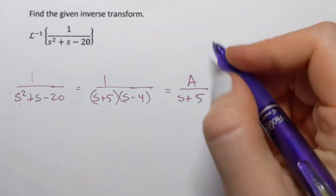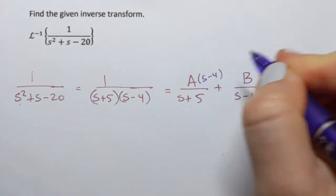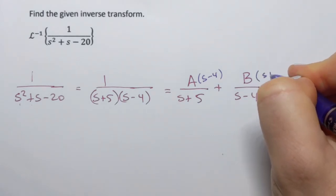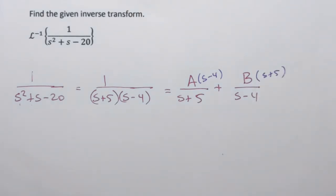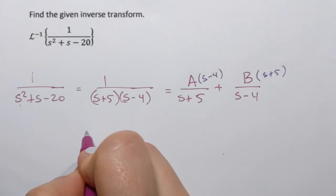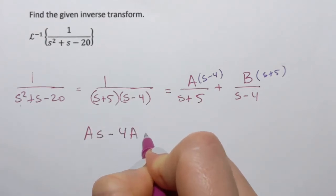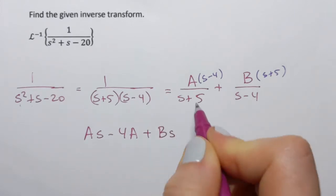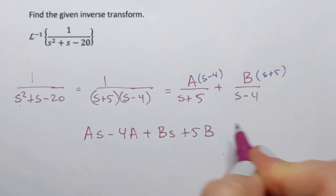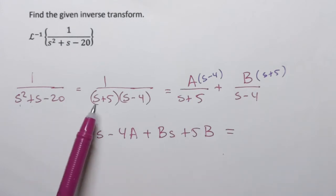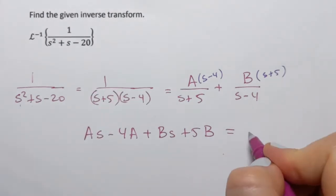Now I have to multiply a by s minus 4 and b by s plus 5. So I will only write the numerator. I will have a s minus 4a plus b times s plus 5b. And that should be equal to the original numerator, which is 1.